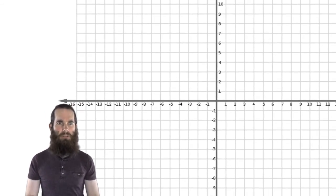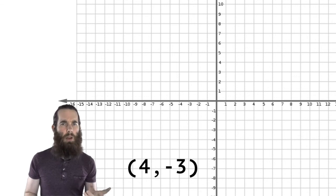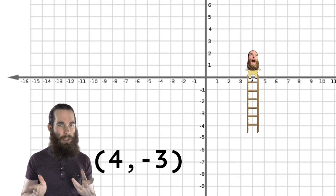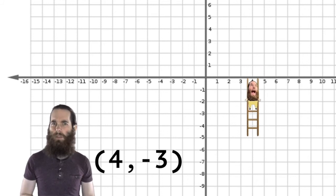Same if I have something like this, 4, negative 3. I will walk to 4, put down my ladder. And I'm actually climbing down this time, a little bit crazy. And I go down to negative 3.